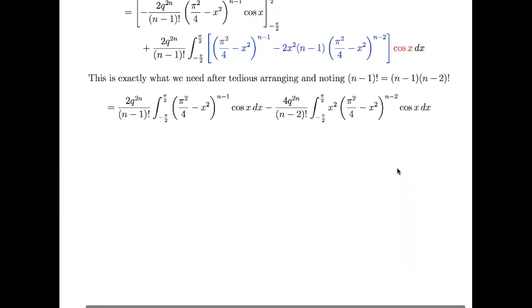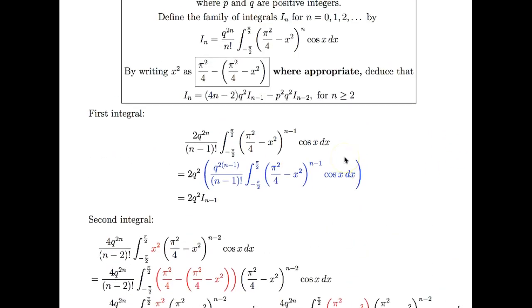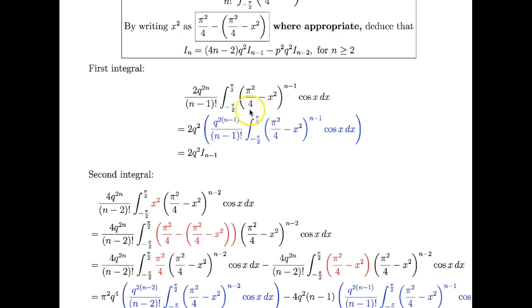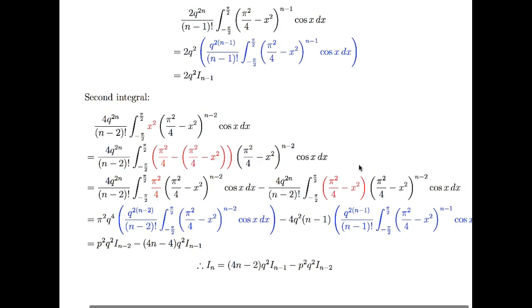So I'm going to look at these two integrals separately. For the first integral, I realize all I need to do is basically just spit out a q squared, and then pretty much there is an i_{n-1} right there in front of me straight away. That is fucking brilliant. The other one, probably going to do a lot more work here. And again, my intuition is kicking in.